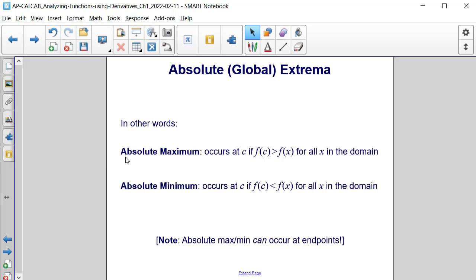Here's another way to think of these terms. An absolute maximum occurs at C if f of C is greater than f of x for all x in the domain.